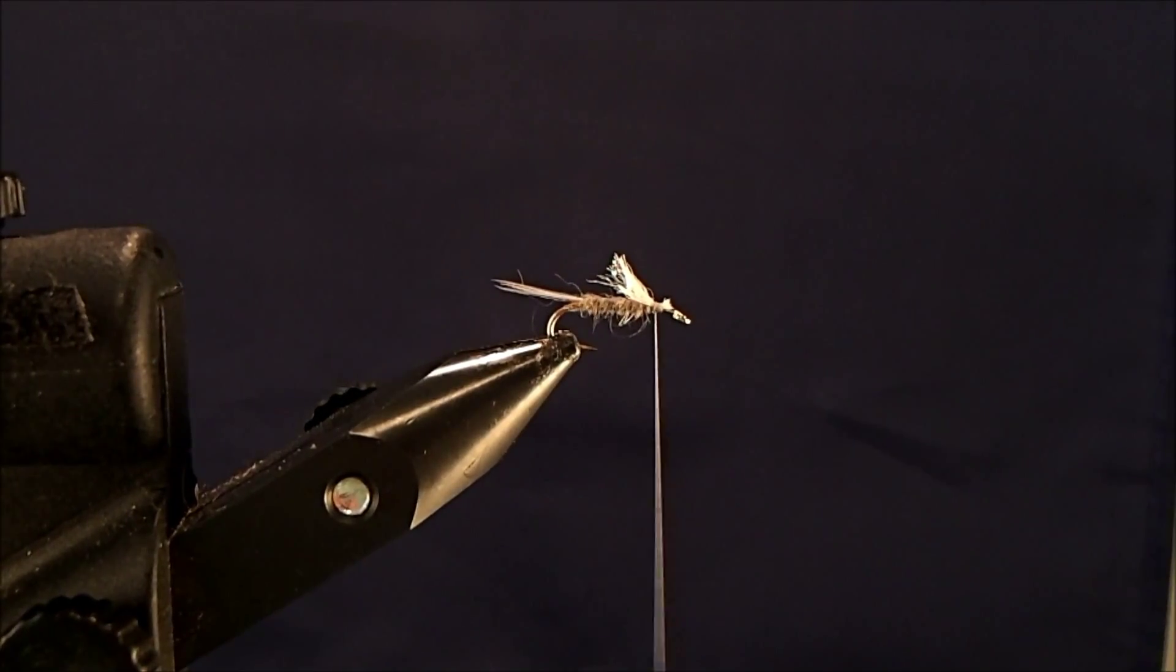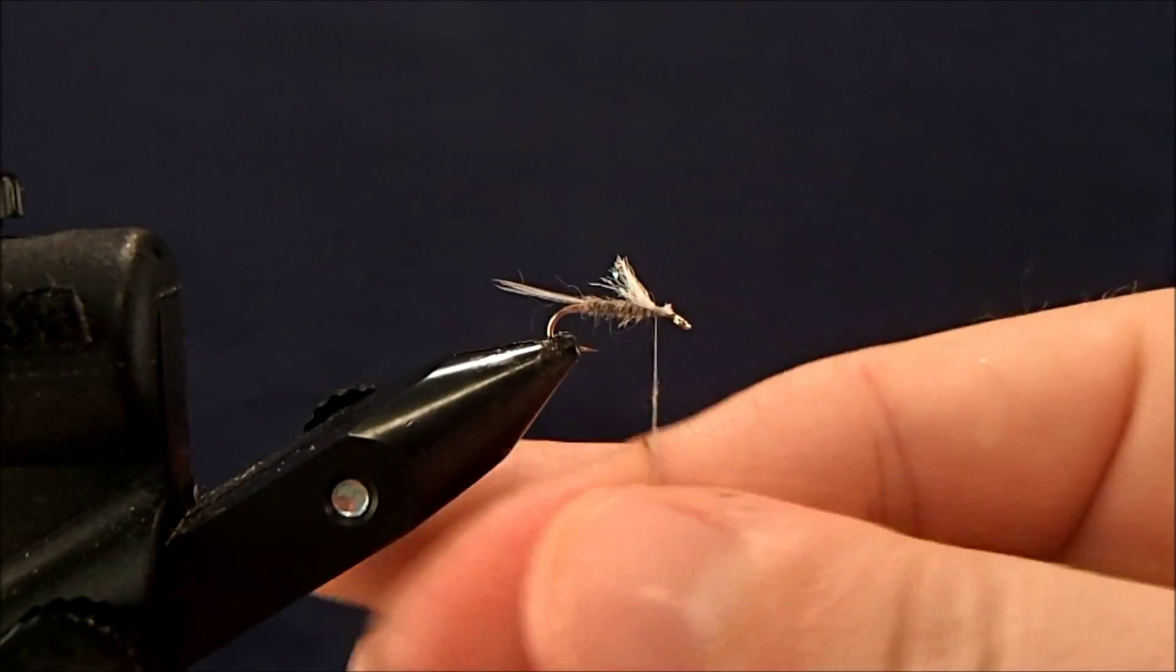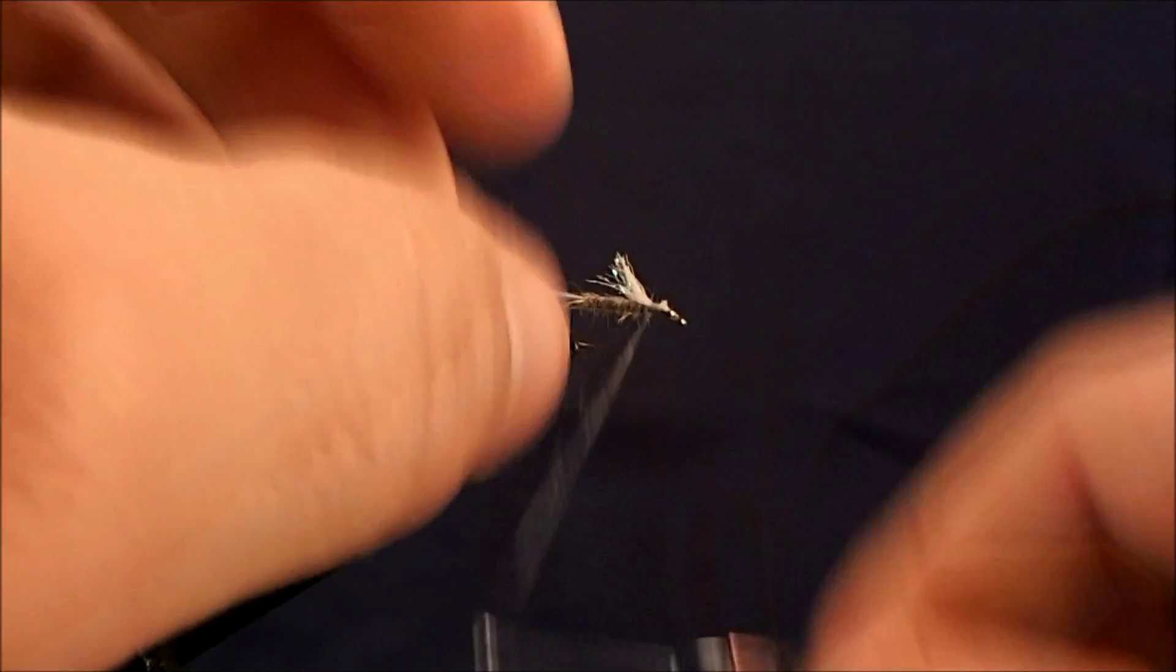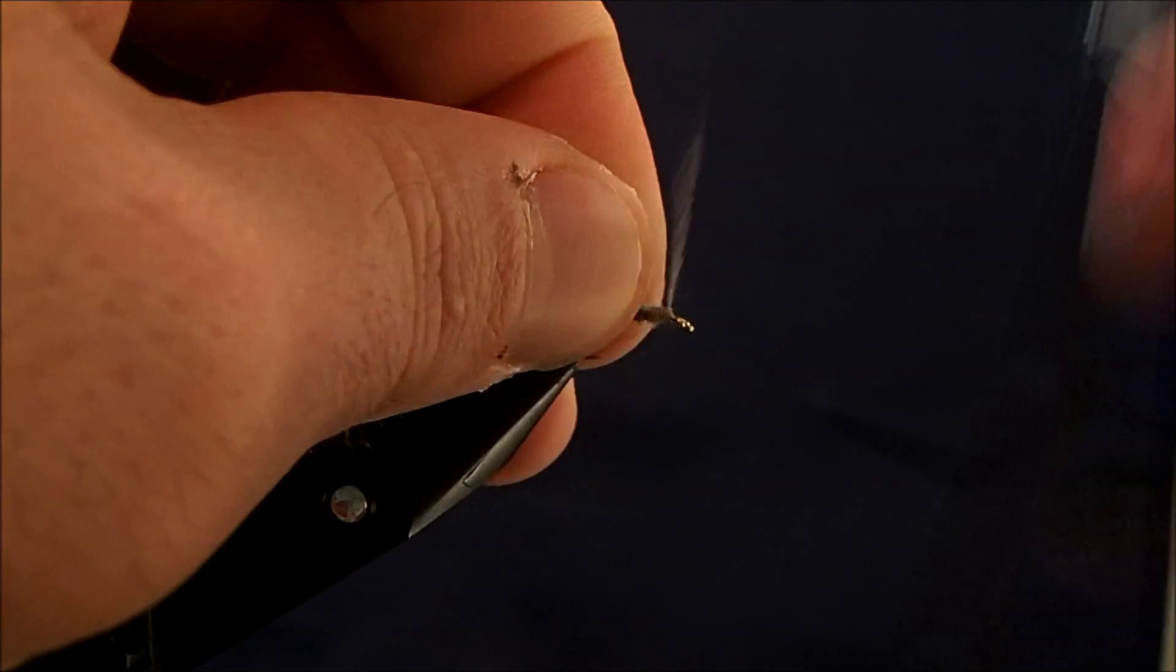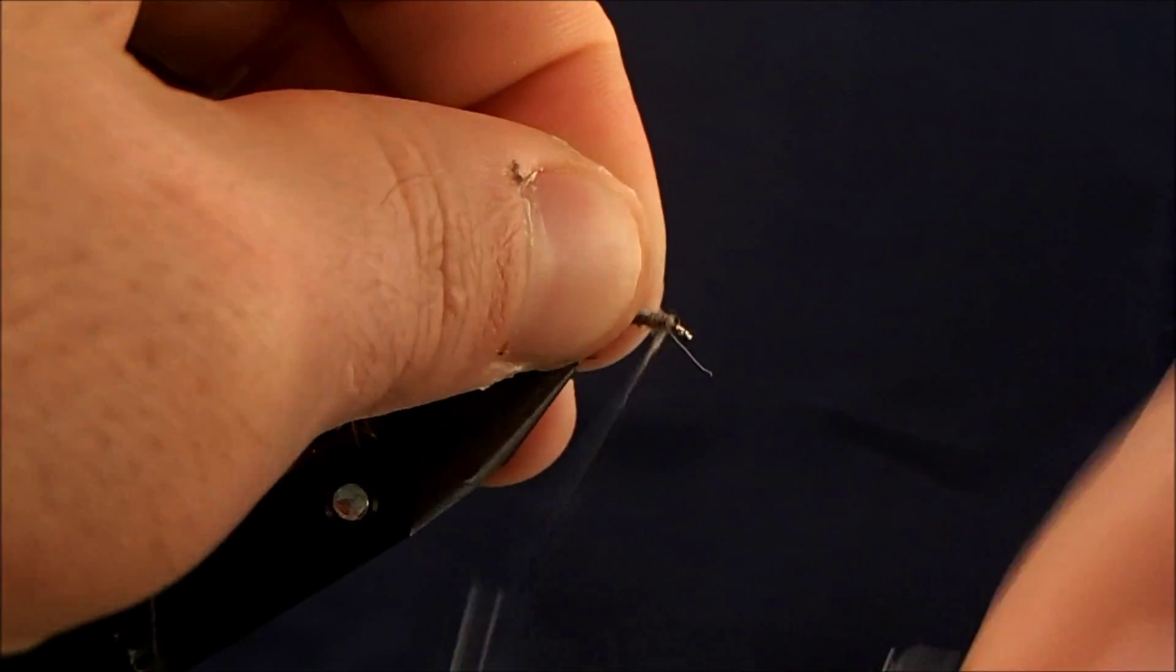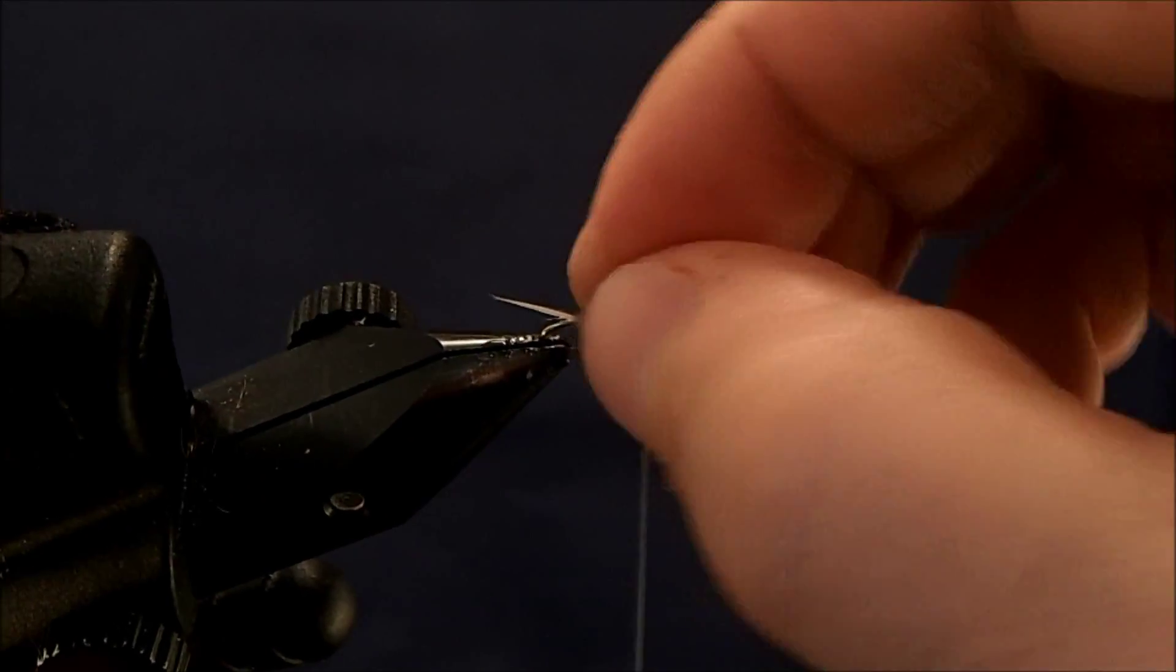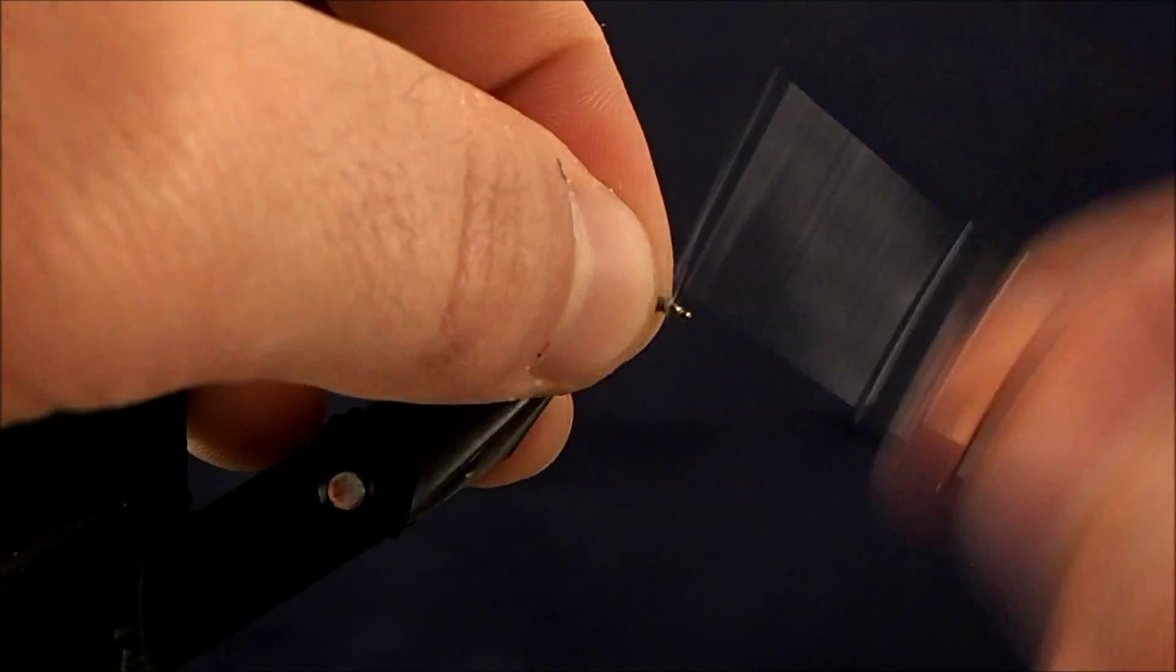And then to finish out the thorax, I'll go back to that same dubbing that I used for the body. Just get a nice bead of that on there. And start to work up to the front. Play with the shuck there to get it how you want it. And then I'll tie in the head.